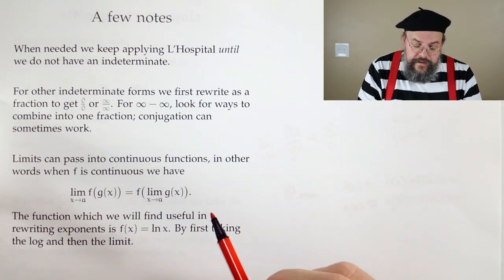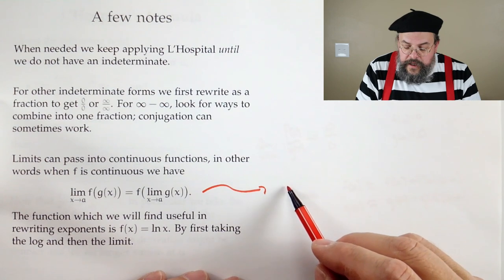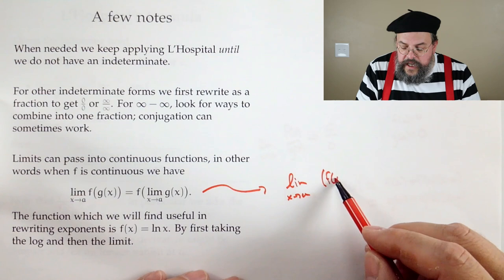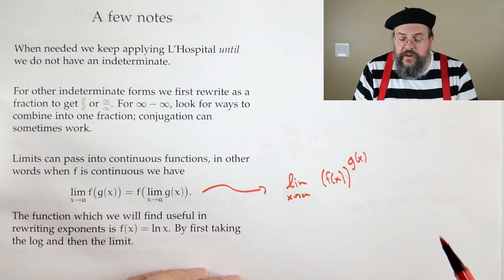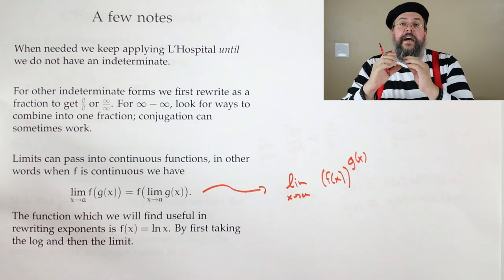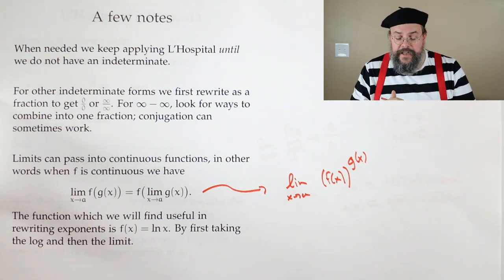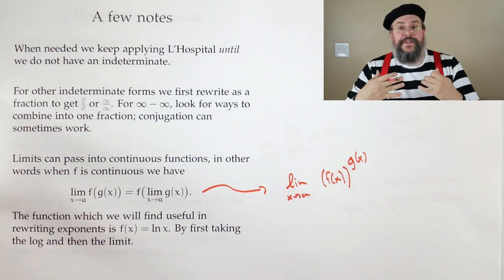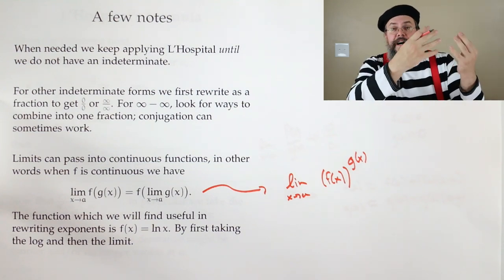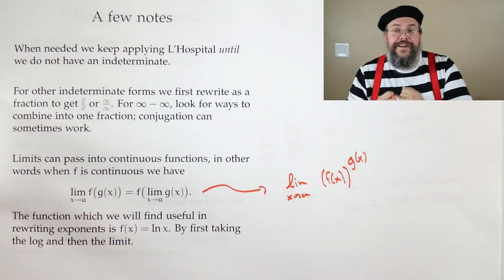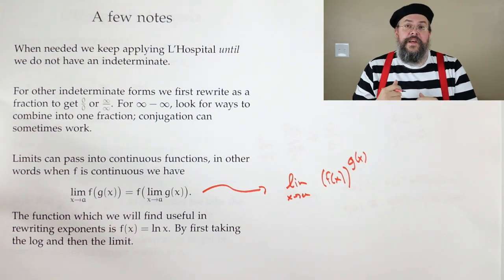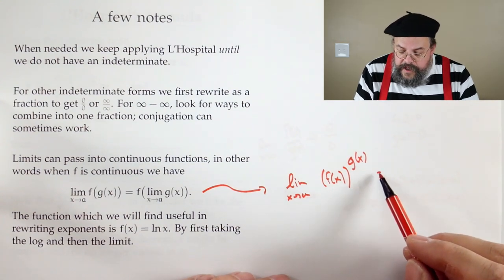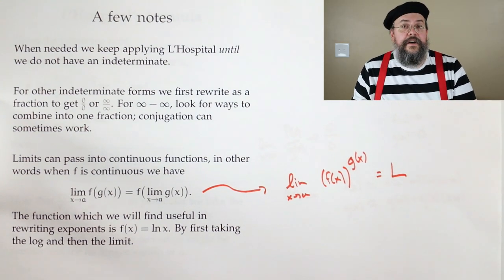So the main way we're going to use this is, oftentimes, if we have something of the form limit as x approaches a of a function, f of x, to a function. So in other words, both the downstairs and the upstairs are changing. So if that's the case, what do we do? Because it's not a fraction. Well, there's a way to take something from the top and to pull it down. And the way we do it is to use natural logs. Now, what I like to do is I like to say, well, suppose this is what we're looking for. Let's call it L, because we're doing a limit.